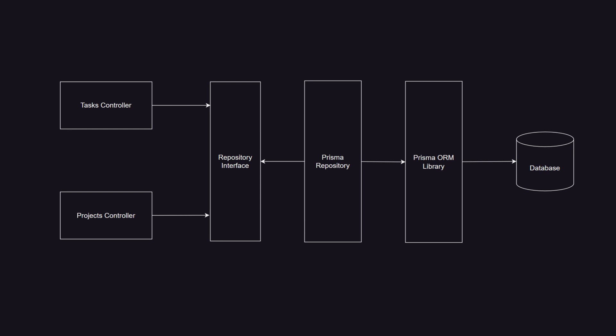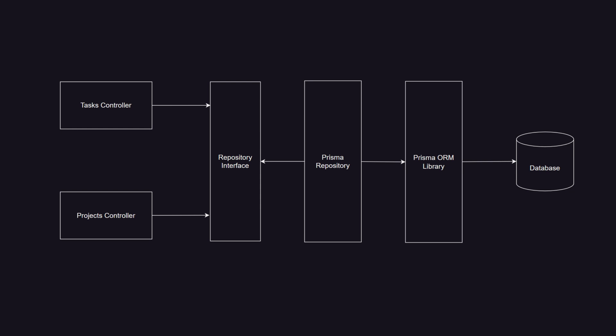The current state of the application is such that tasks and projects controllers have Prisma ORM as a direct dependency. By creating a repository, we will remove this dependency. At the heart of the repository pattern lies an interface — a contract that ensures the repository will provide a set of specific methods and outputs to the controllers or client code in general. Instead of having a direct dependency on Prisma ORM, tasks and projects controllers depend on the interface, which is implemented by a Prisma repository that has Prisma ORM as a dependency. Now, if we decide to use Sequelize or a NoSQL database instead, all we have to do is create a Sequelize or Mongoose repository that implements the interface — no changes to controllers are needed. In large projects with many controllers, the repository pattern can potentially save a huge amount of work.